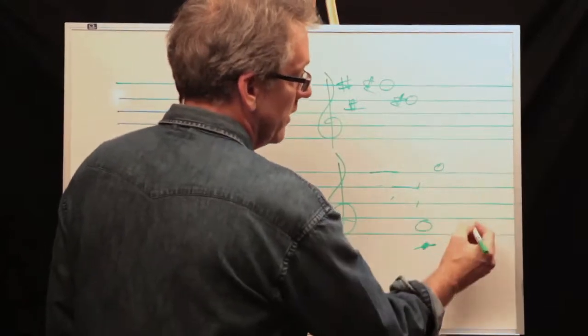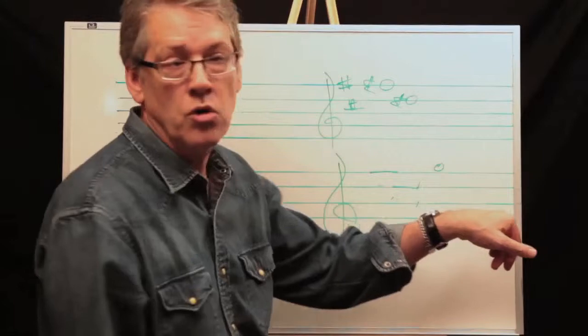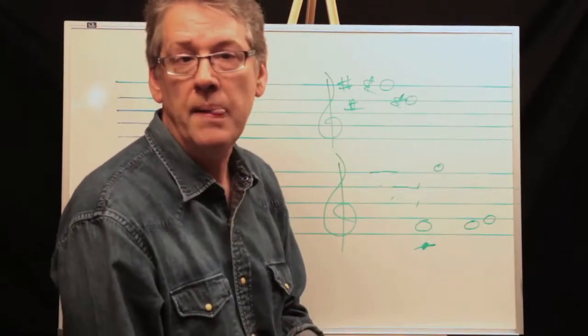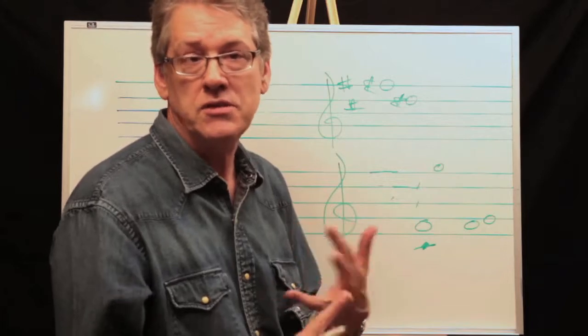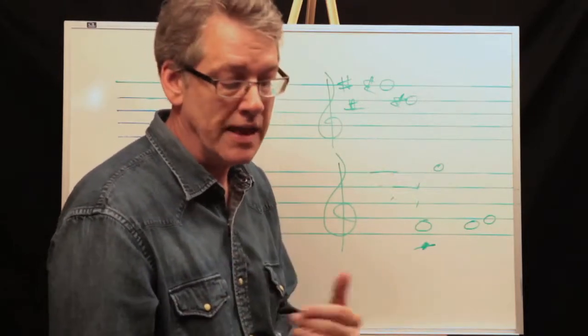So with the trumpet, if you want to hear an F, you write it here because it's only up a whole step. But for tenor sax, it's a ninth. Alto sax is up a sixth. Bari sax is up a thirteenth. And we can get into that later.